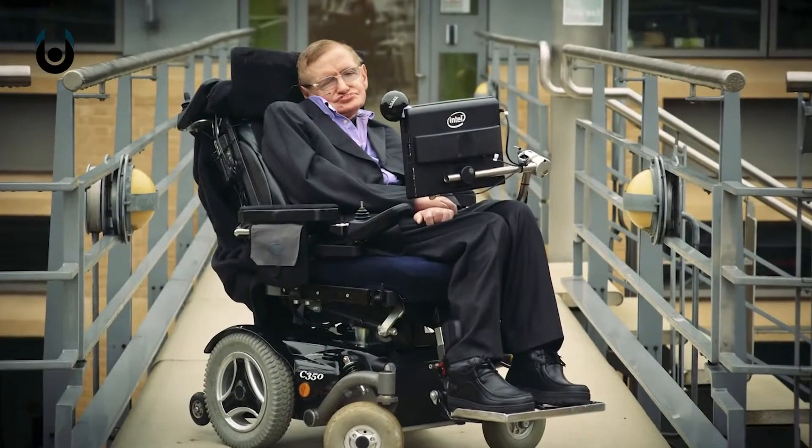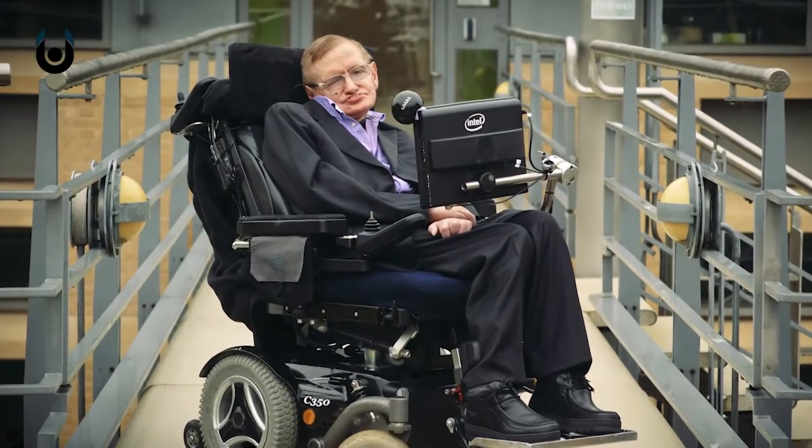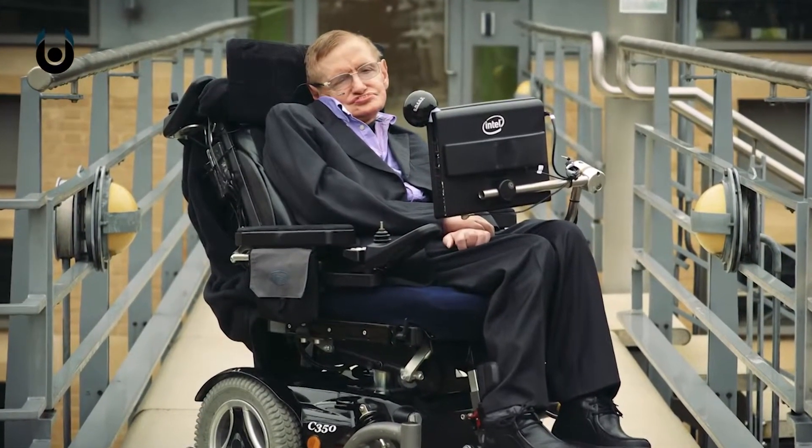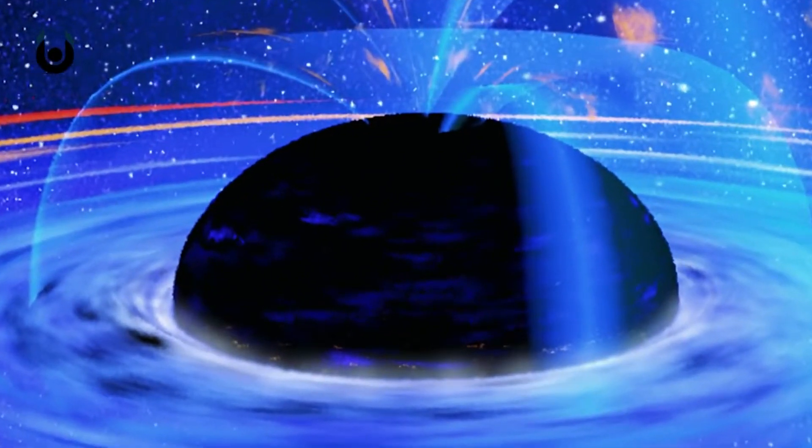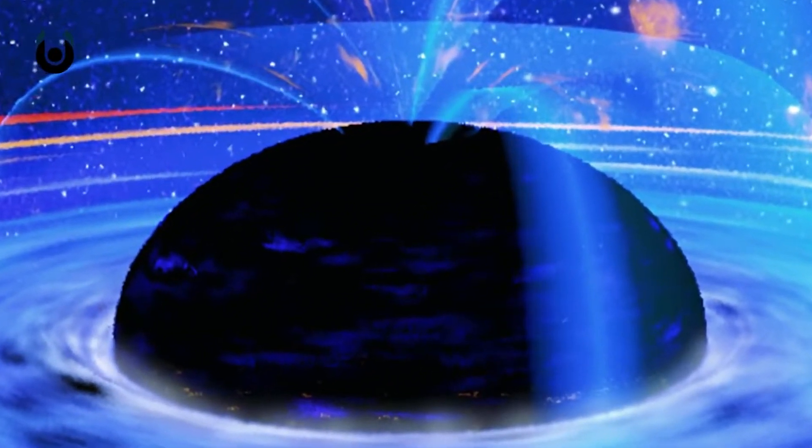You might have heard of Stephen Hawking. He is a theoretical physicist and cosmologist and is at the forefront on the study of black holes. He came up with a theoretical prediction that black holes emit radiation. This, of course, is now known as Hawking radiation. Hawking radiation reduces the mass and energy of black holes and is therefore also known as black hole evaporation.